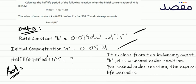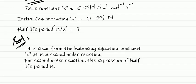So this is your equation which was given on top of that aspect I have assumed and what I understand. It is clear from the balancing equation and unit k it is a second order reaction. I have this reaction that I have what I have rate constant.